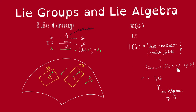We claim that every left invariant vector field is uniquely determined by its value at the identity. If we know X_e then we know X_g for every point g in the manifold. This is because left multiplication by g is a diffeomorphism, so it induces an isomorphism on tangent spaces. Since X is left invariant, the push forward of X is X itself, meaning the image of X_e under this push forward is X_g. Thus, once we know X_e we can find X_g by pushing X_e forward via left multiplication by g.